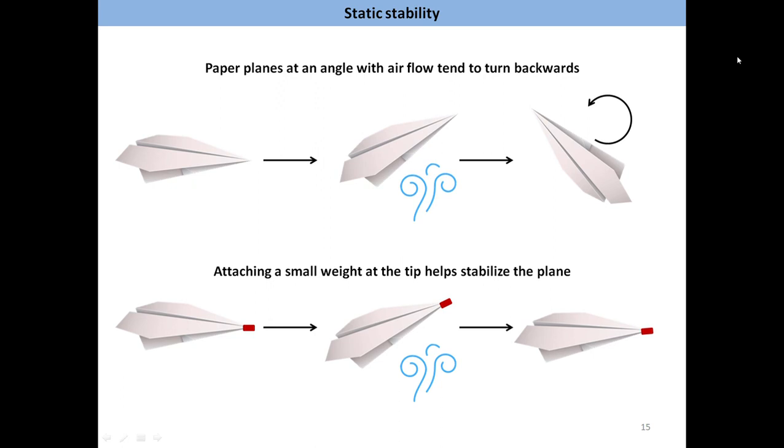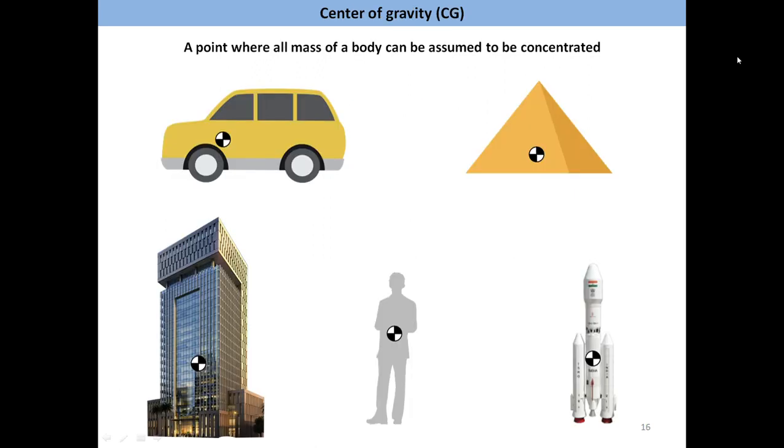How does this happen? In order to explain this, we need to briefly talk about two concepts. The first concept is that of center of gravity. The center of gravity of an object is a point where you can assume all of its mass is concentrated. For example, the center of gravity of a car will be closer to its heaviest parts, mostly around the front seats. The center of gravity of a human being is near the belly. In a similar manner, a rocket also has its own center of gravity.